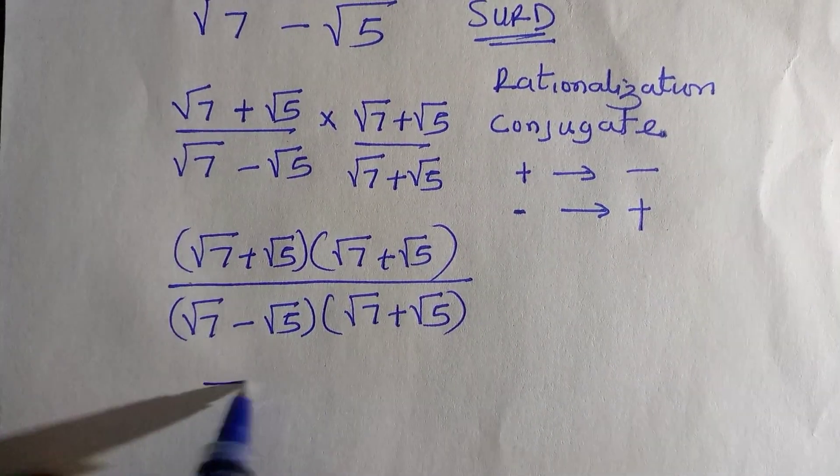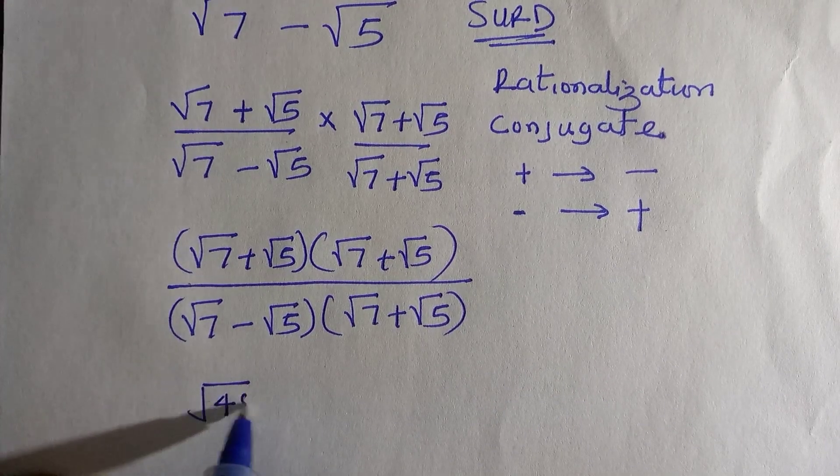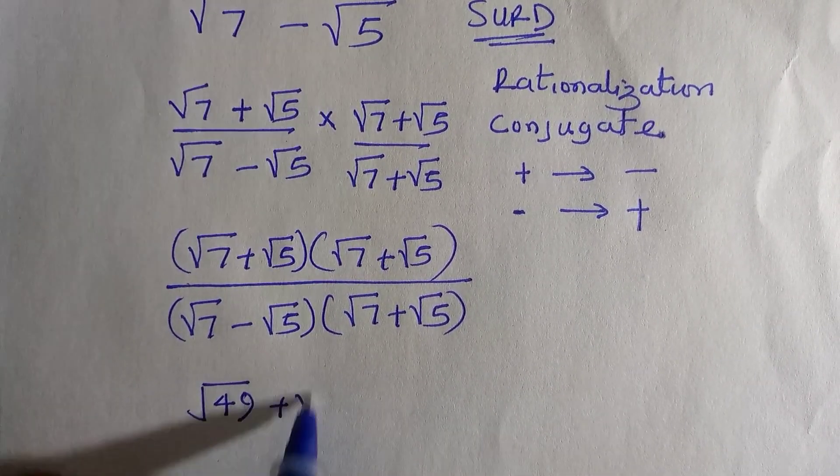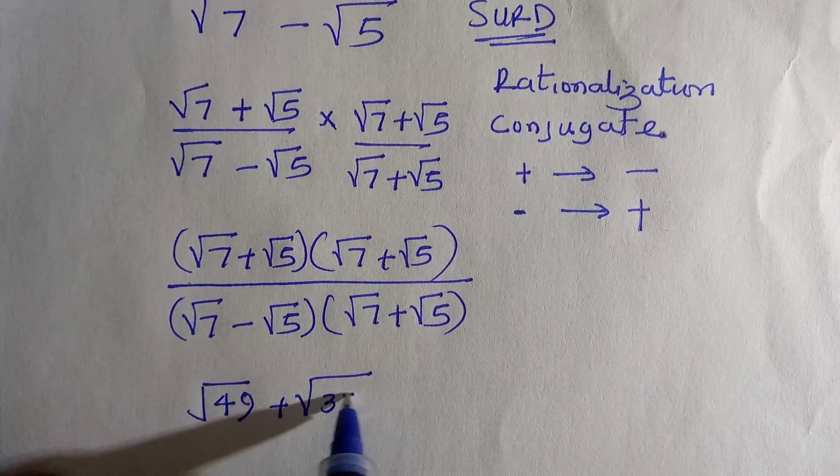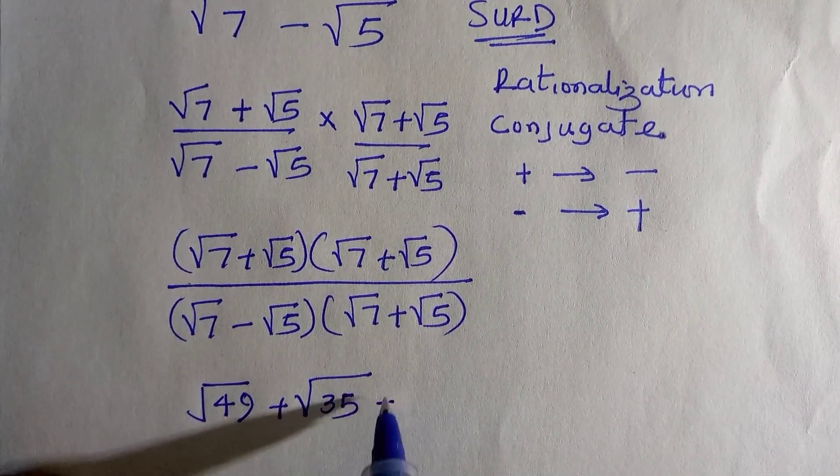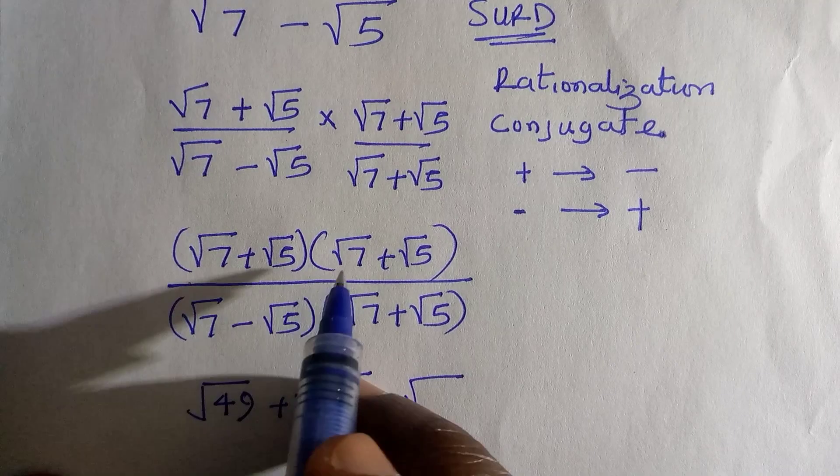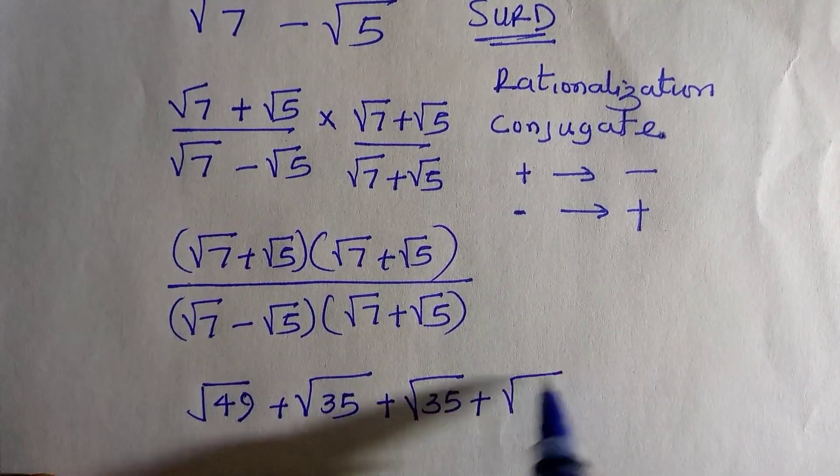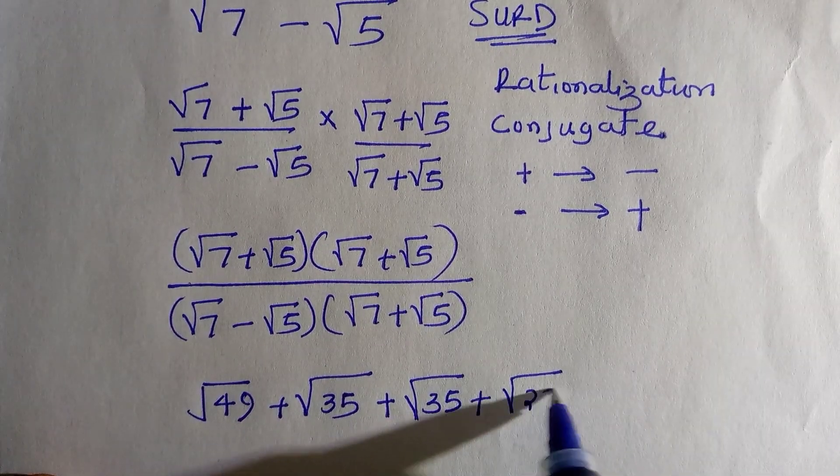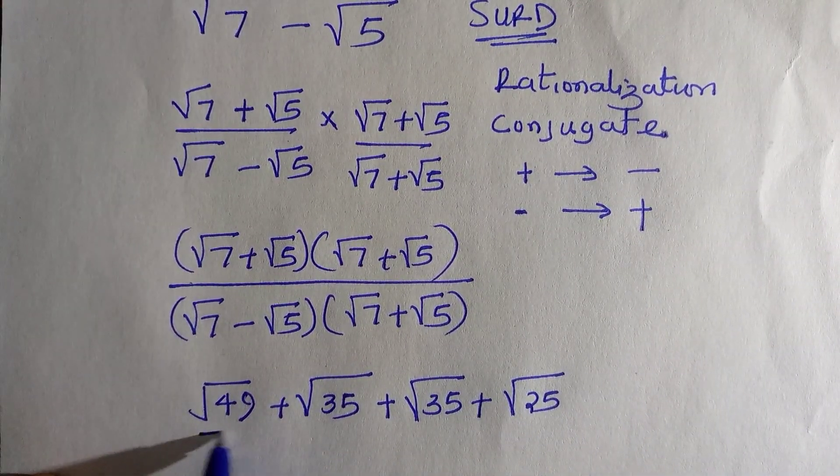For the numerator, we have √49 + √35 + √35 + √25. That's √7 times √7 which is 49, plus √7 times √5 which is √35, plus √7 times √5 again which is √35, plus √5 times √5 which is 25. All divided by...